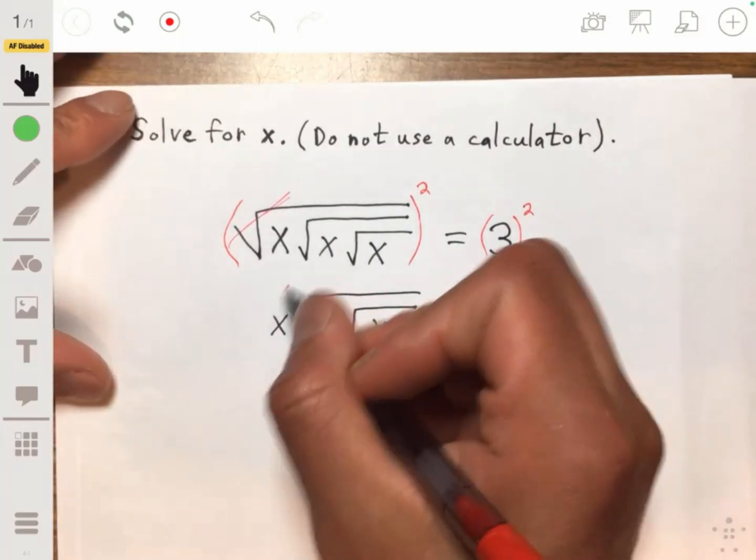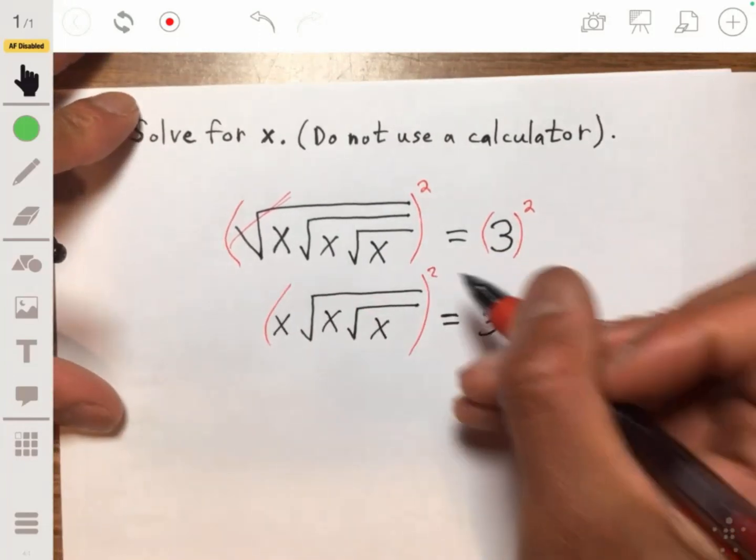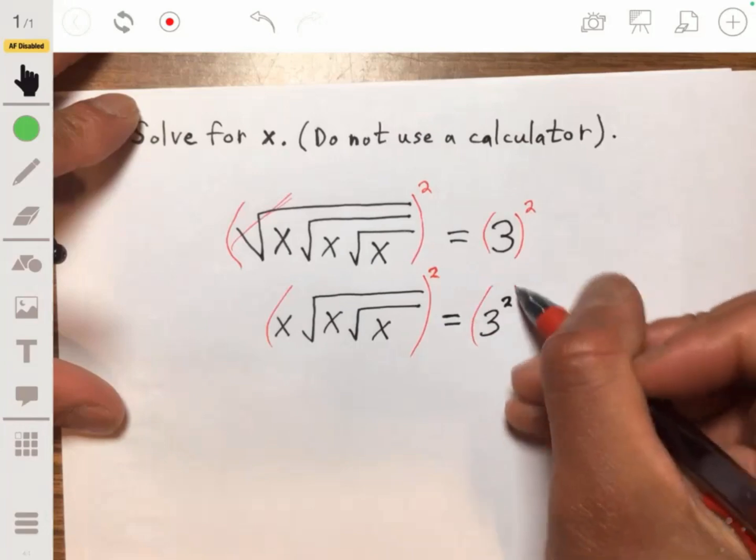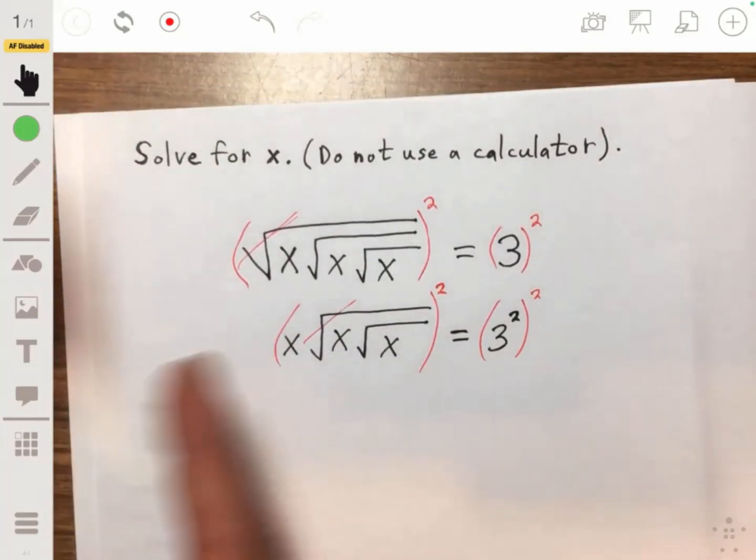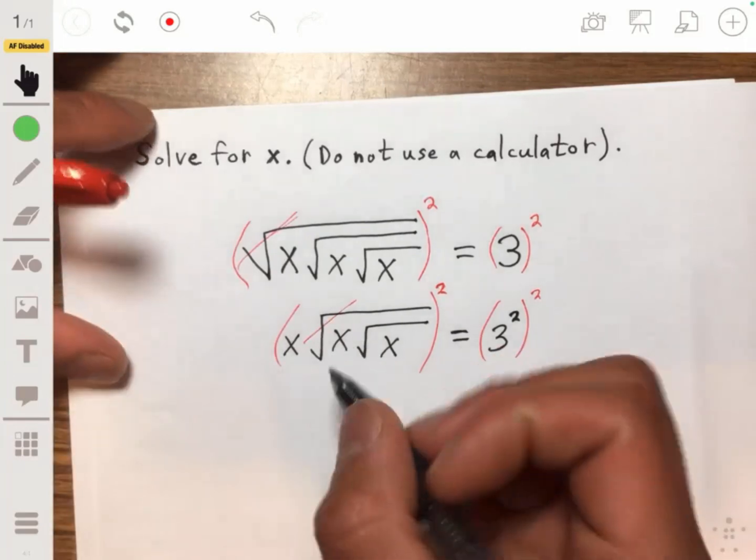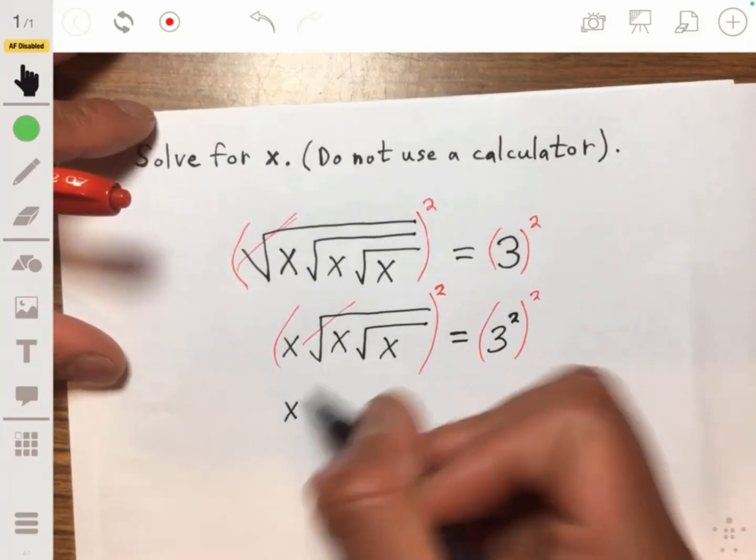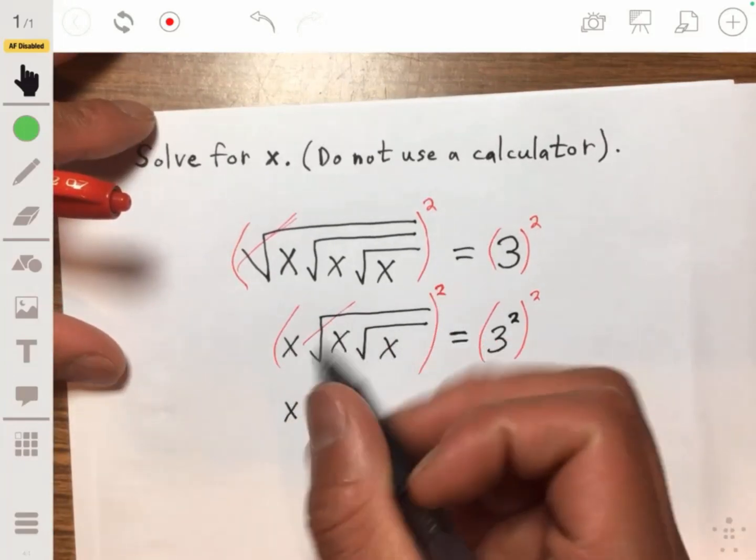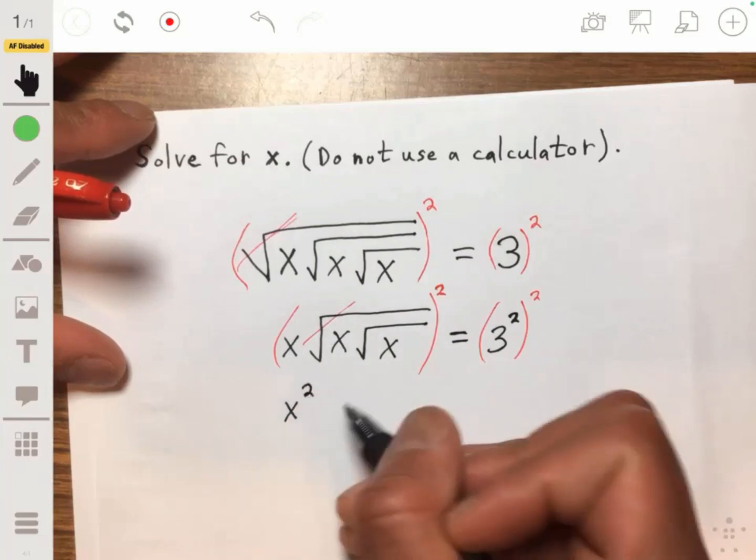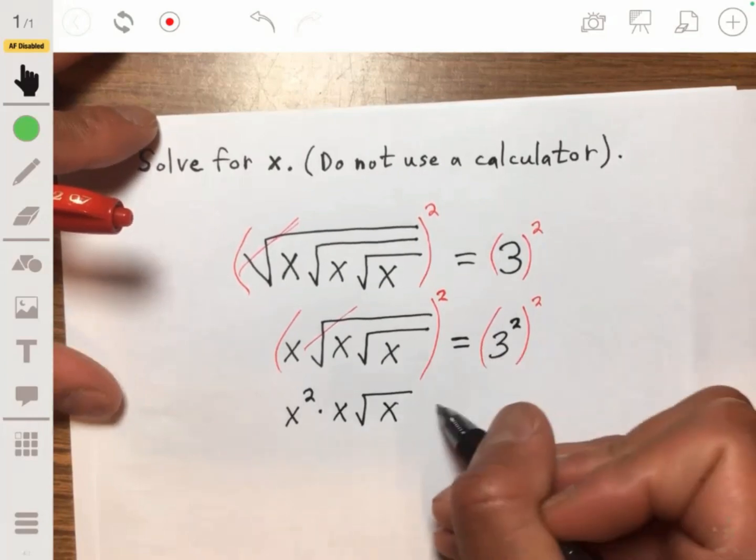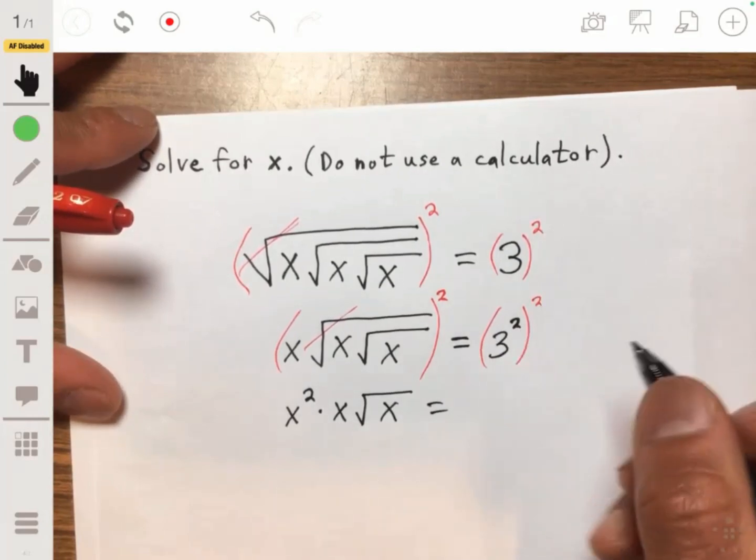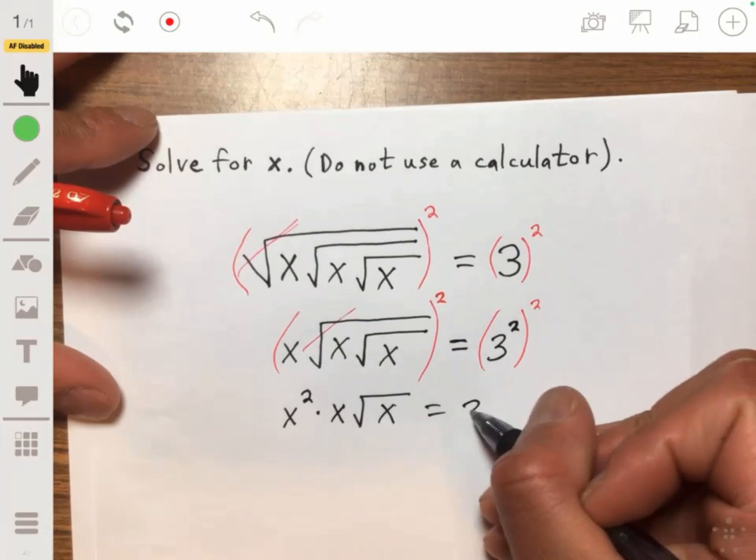And then we're just going to do it again. We're going to square both sides. This will cancel out this second square root, radical symbol. And make sure we square this x term on the outside. So we're going to have x squared times x times the square root of x being equal to 3 squared to the second power, or just 3 to the fourth.